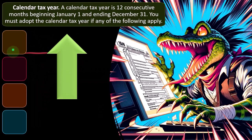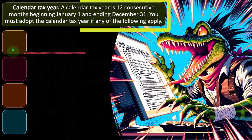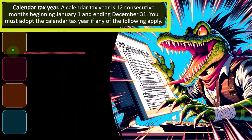A calendar tax year is 12 consecutive months beginning January 1st and ending December 31st, by far the most common year adopted for sole proprietor type businesses reporting on a Schedule C — the calendar year, January to December.